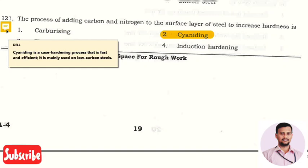What is this cyaniding? Cyaniding is a case hardening process that is fast and efficient, and it is mainly used for low carbon steels.